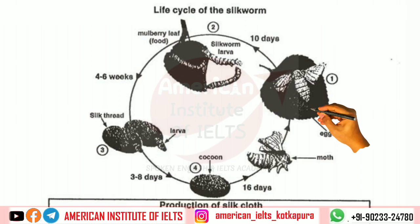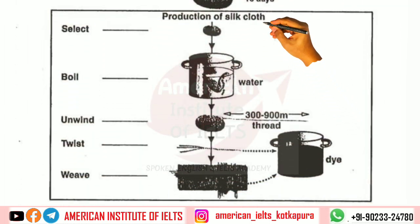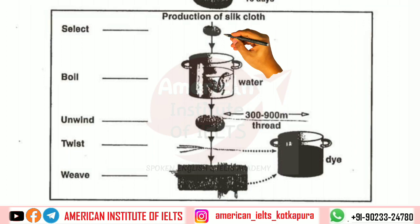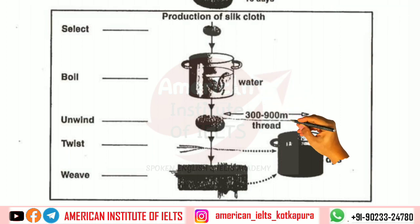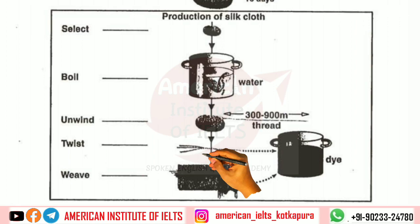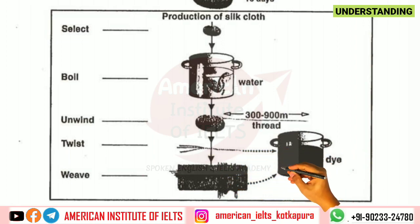The larva starts a new cycle again. Probing further to the production of silk clothes, the first step involves the cocoon being selected. Then there is a twisting of thread, and after weaving, dyeing can also be done.